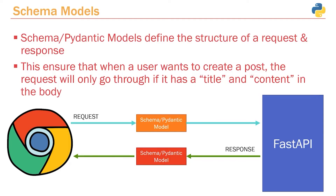Let's start off by going over the schema models or the Pydantic model. The schema or Pydantic model defines the structure of a request and a response. When it comes to creating a post, we can define exactly what the request should look like. When we create a brand new post, we need the user to provide the title and the content of the post. Optionally, they can also provide whether it's published or not, but we've provided a default value so they don't actually have to send that.